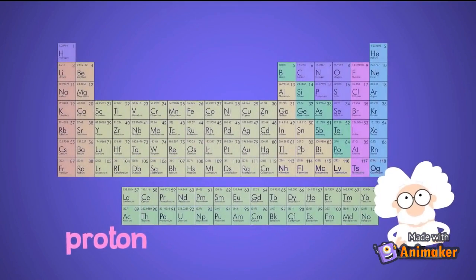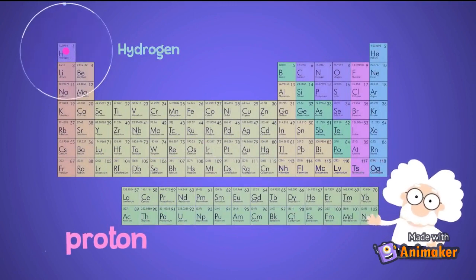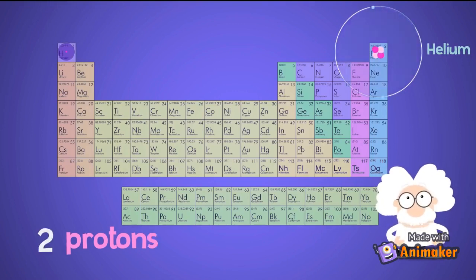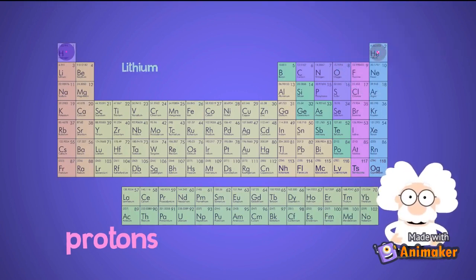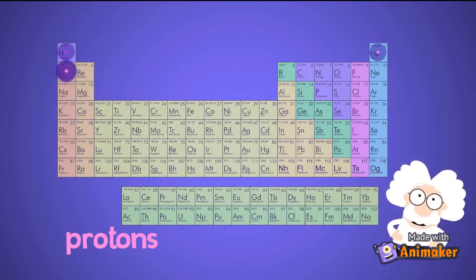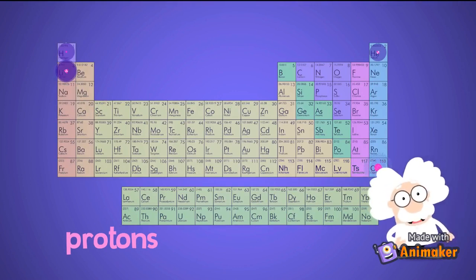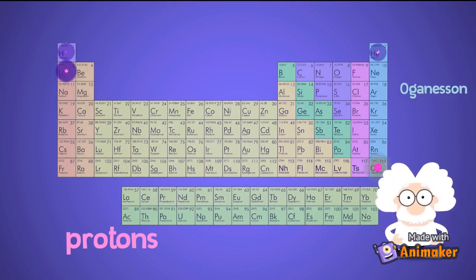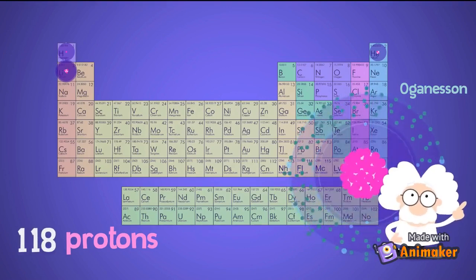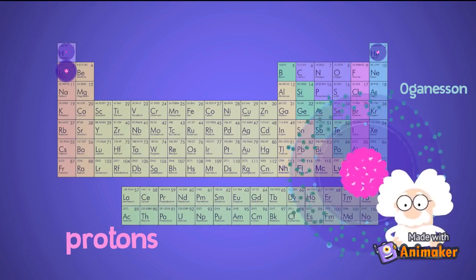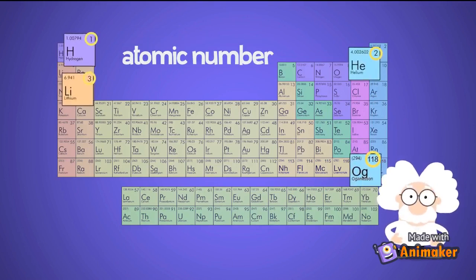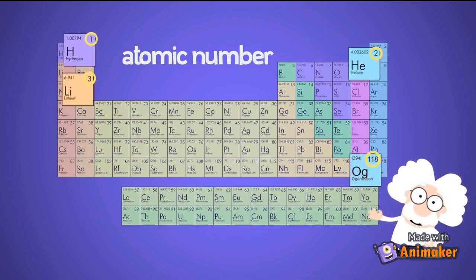For example, it's the number of protons inside an atom that makes each element different. If we look at the periodic table, the first element, hydrogen, has one proton. The second element, helium, has two protons. And the third element, lithium, has three protons. This goes on all the way up to the 118th element, oganesson, which has 118 protons in its nucleus. The number of protons in an atom is also called its atomic number, which you can see on the periodic table of elements.